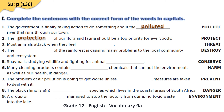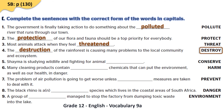Sentence three: most animals attack when they feel threatened — we need an adjective from threat, which is threatened. Sentence four: the destruction of the rainforest is causing many problems to the local community and ecosystem — the word destroy is needed here as a noun, so the answer is destruction.